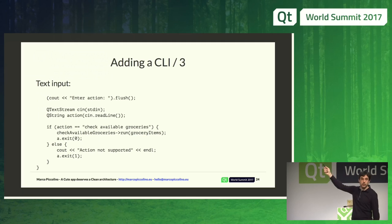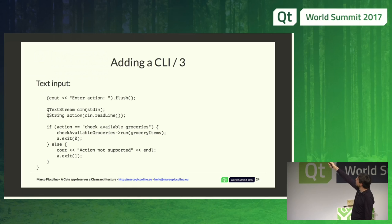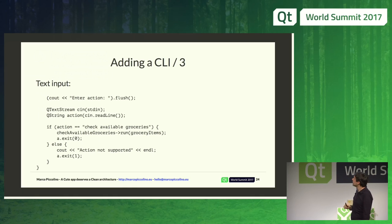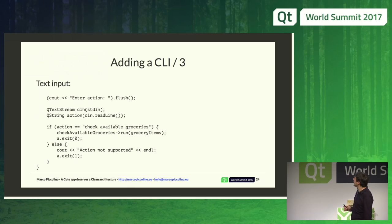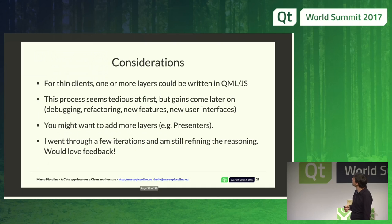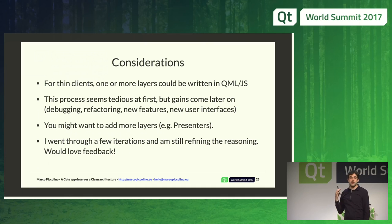For the input of my command line interface, I parse an action string 'check available grocery items.' When I encounter that string, I run the use case CheckAvailableGroceries, then exit with a success message. If any other input is typed, I output 'action not supported' and exit. This is done in C++, but you could do the very same things in QML.